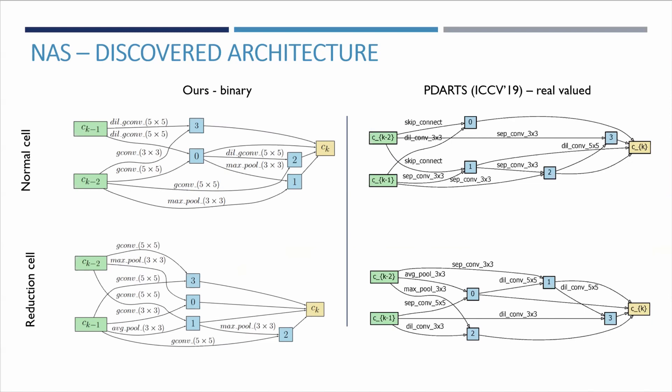As depicted, the cells found tend to prefer convolutional layers with larger kernel sizes, such as 5×5, which help alleviate the limited representation power found in such networks. In addition, to preserve information flow, a real-valued path that connects one of the input nodes to the output is always present.